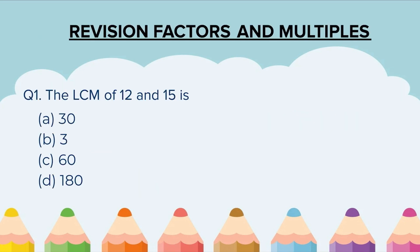Question 1. The LCM of 12 and 15 is: A. 30, B. 3, C. 60, D. 180.